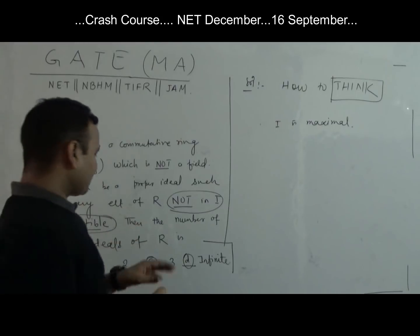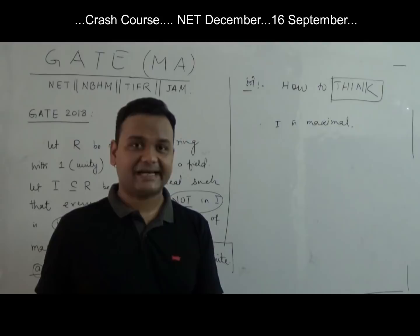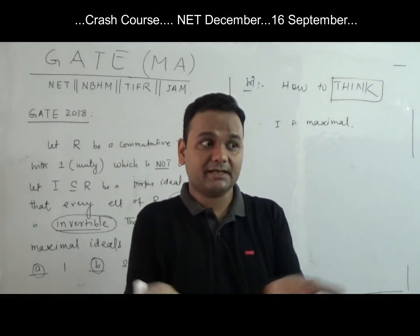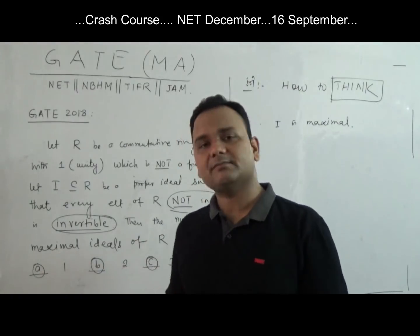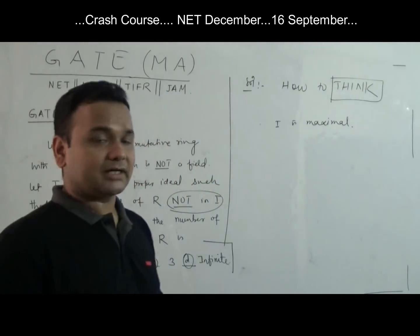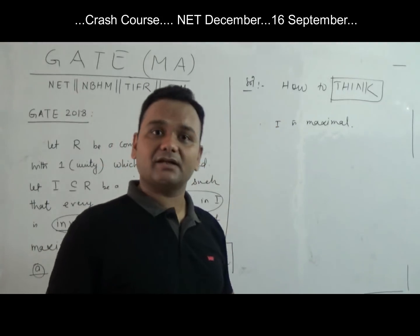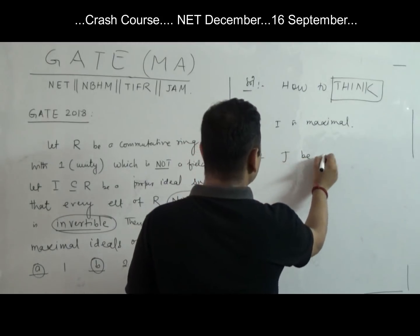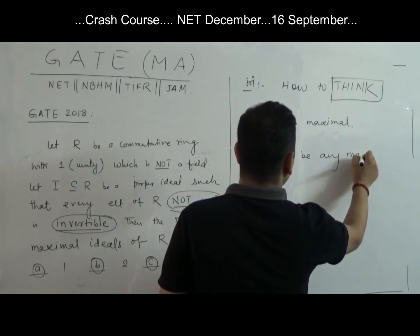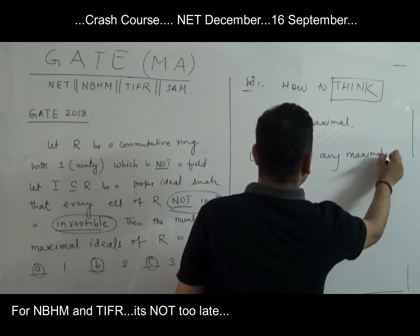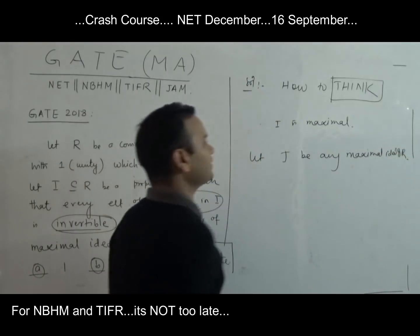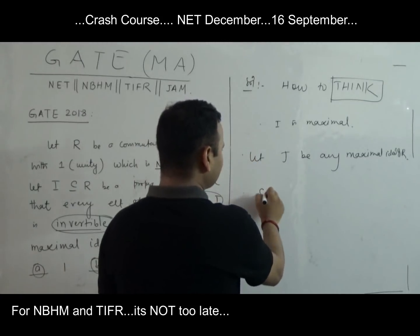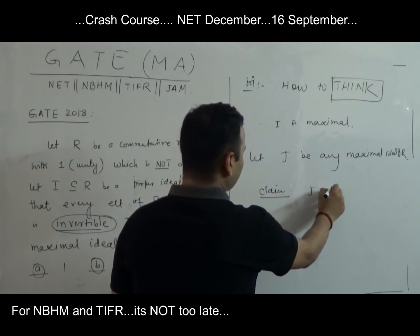Once the ideal is maximal, we know we have at least one maximal ideal. But how many are there? I claim this is the only maximal ideal of R. To prove this: let J be any maximal ideal of R. I am going to claim that J must equal I.